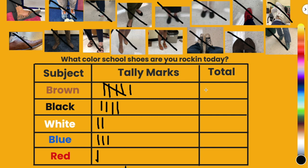So now if I want to finish filling out my tally chart, I need to count how many tally marks are in each section. For brown shoes, I see I have five, six tally marks — so the total is six teachers wore brown shoes today. And then for black, I have one, two, three, four. For white, I have one, two. For blue, I have one, two, three teachers. And then for red, I have one teacher who wore red shoes today.